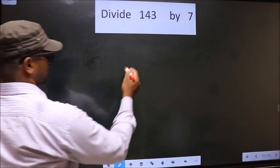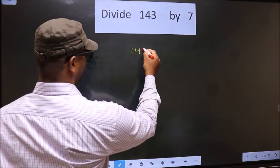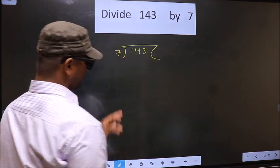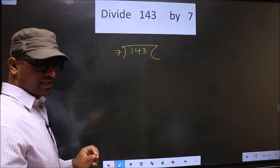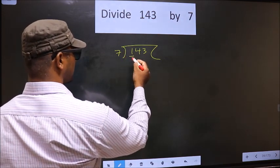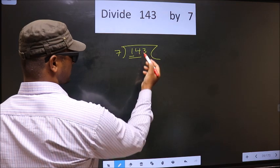That is 143, 7. Okay. Next. Now here we have 1, 1 smaller than 7. So we take 2 numbers that is 14.